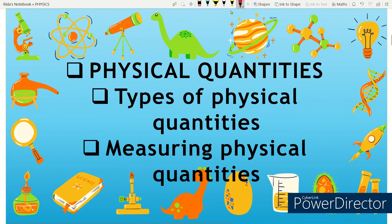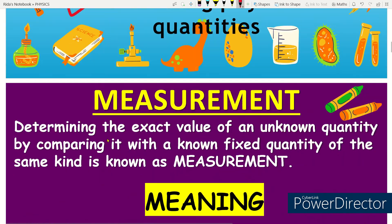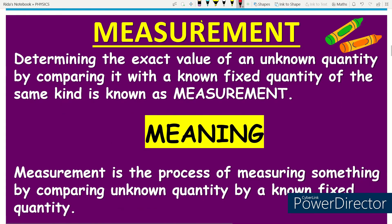Let's start this chapter. In part one we are going to cover: physical quantities, types of physical quantity, and measuring physical quantities — meaning how we measure a physical quantity. The definition of measurement in our book is: it determines the exact value of an unknown quantity by comparing it with a known fixed quantity of the same kind.